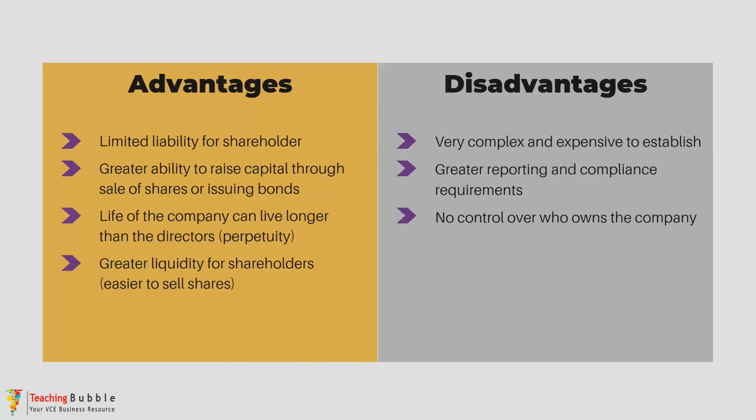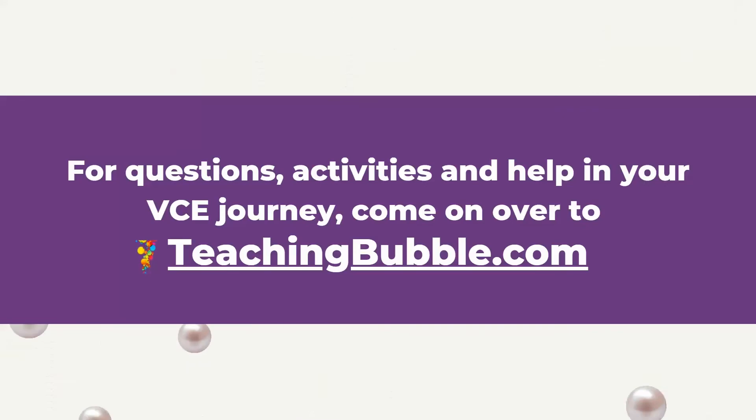However, the complexity and expense of starting a public listed company is even higher than with a private limited company. There are also greater reporting and compliance requirements, as owners and the public must be notified of financial performance and anything that may impact the company's value. And because shares can be freely traded, there is no control over who owns the company — anyone can purchase a significant amount of ownership at any time. For questions, activities, and help with your VCE journey, come on over to teachingbubble.com.